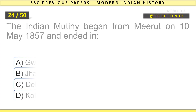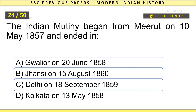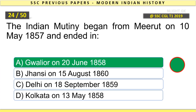The Indian Mutiny began from Meerut on 10th May 1857 and ended in Gwalior on 20th June 1858.